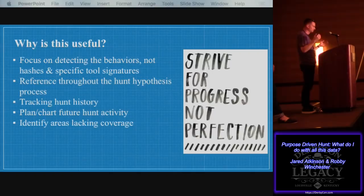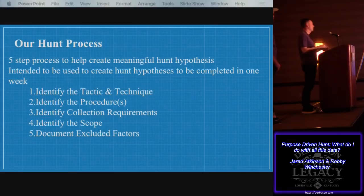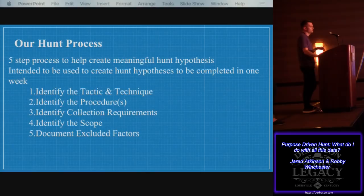Enter the hunt hypothesis. We're going to take all that information and talk about our five-step process to make a meaningful hunt hypothesis that you can use to hunt your environment. The five steps are: identify the tactic and technique, identify the procedures, identify the collection requirements, the scope, and then document the excluded factors. We recommend designing these hypotheses to take a week — that makes it a bite-sized chunk, everything is designed with the intention of being achievable.